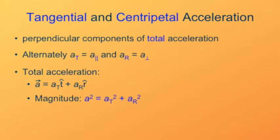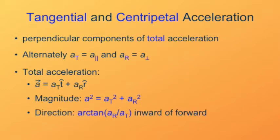The magnitude of the total acceleration — since these two components are perpendicular — we can say that the square of its magnitude is equal to the sum of the squares of the two perpendicular components that make it up.